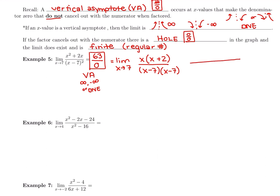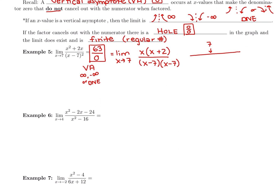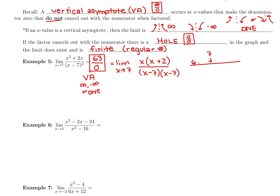We're going to use those factors and make a table of approaching values, approaching 7 on both sides. Plugging in 6.9: in the numerator, the first factor x is positive and x + 2 is positive, giving a positive top. In the denominator, 6.9 minus 7 is negative, and again negative — negative times negative is positive. So positive divided by positive: the left-hand limit is going up to positive infinity.